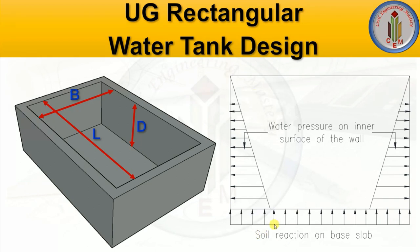Before proceeding with the design, let's look into the pressure diagram. On the base slab, we will be getting soil reactions. On the inner side of the wall, we will have water pressure acting on the inner surface of the wall. This is the pressure diagram when the tank is full of water.